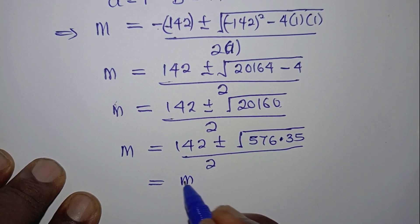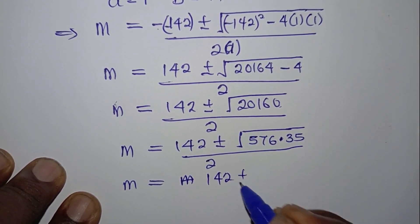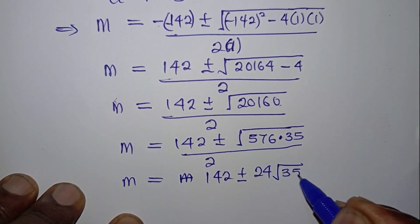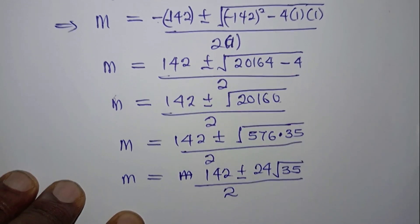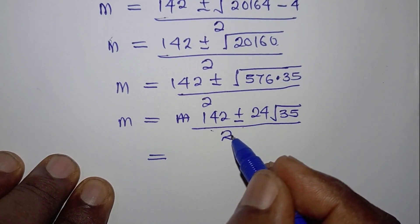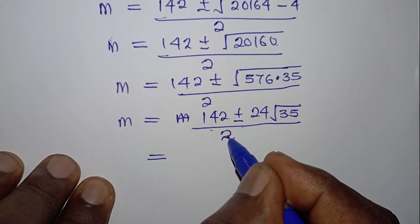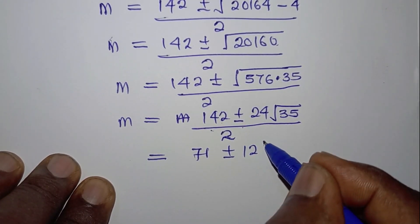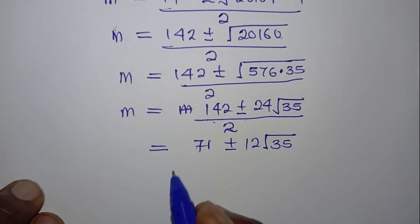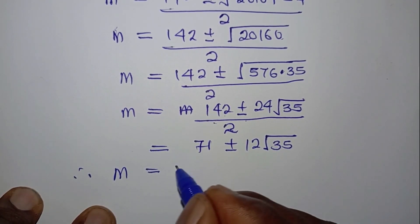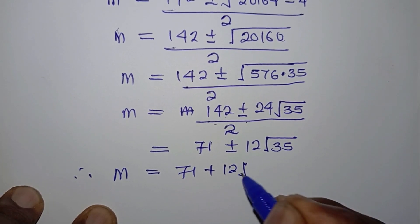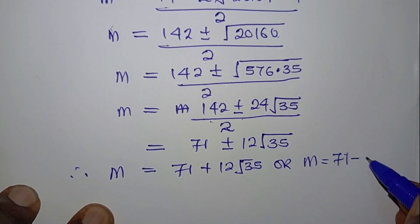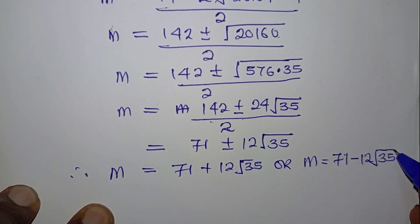So √20160 = √(576 × 35) = 24√35. Therefore m = (142 ± 24√35) / 2, and dividing through by 2: m = 71 ± 12√35. This gives us m = 71 + 12√35 or m = 71 - 12√35.